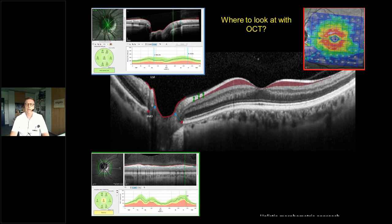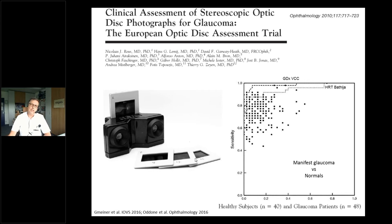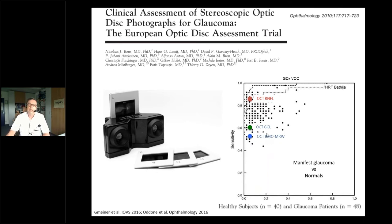Taking all three measurements into account we can have a holistic morphometric approach to the disease. A paper from 2010 showed eminence-based medicine by experts compared to evidence-based medicine using machines — the GDx VCC and the HRT. Experts had a wide spread in judging healthy versus diseased optic disc stereo slides, while the machines were very good. Overlaying results with the Spectralis today, the nerve fiber layer still has the best performance, along with ganglion cells and minimum rim width at Bruch's membrane opening.